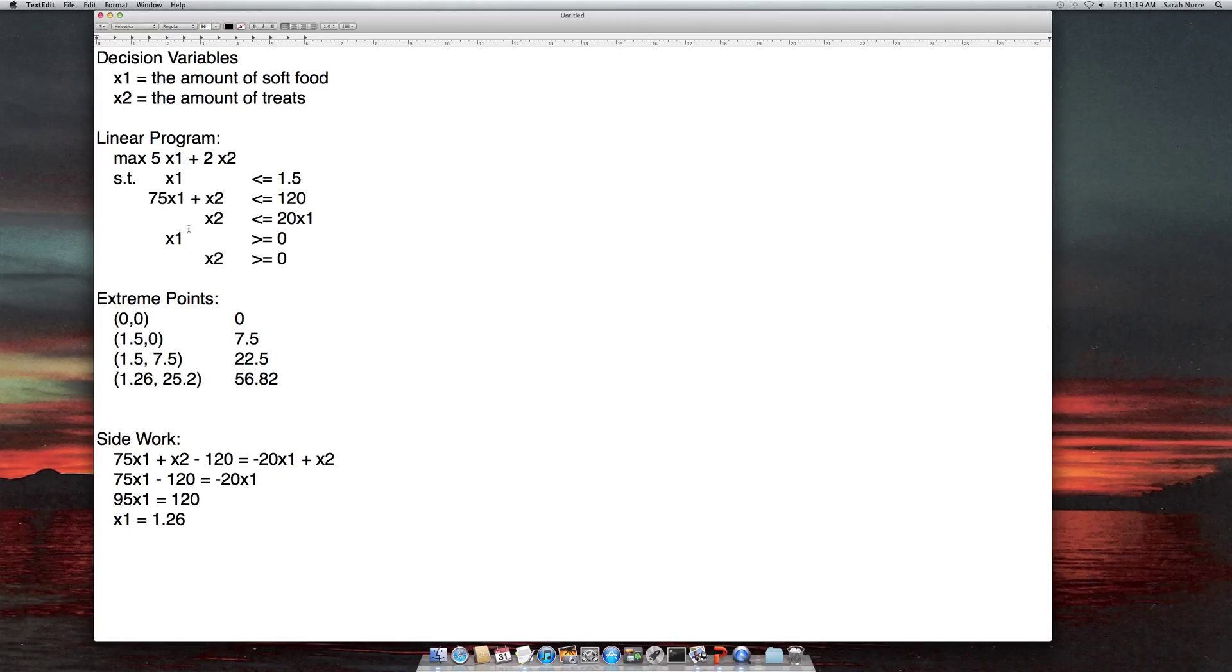And so now we know we have a maximization problem. I'm looking at which extreme point is the highest. This one clearly is. Therefore this point 1.26, 25.2 is my optimal solution. One thing to note is if, let's say for example, this value and this value were equal, you would then know that the line between them.